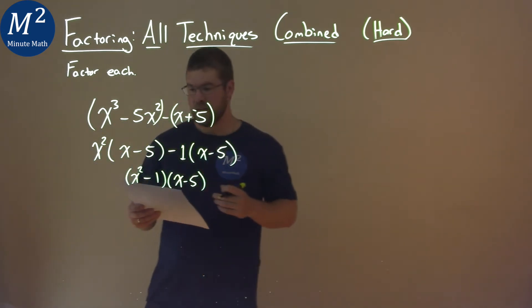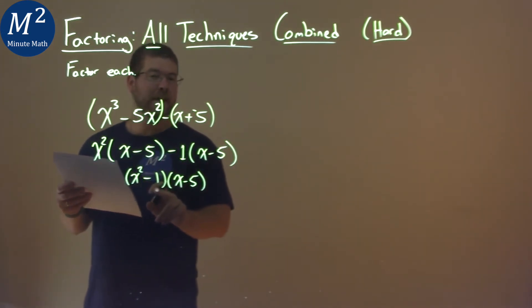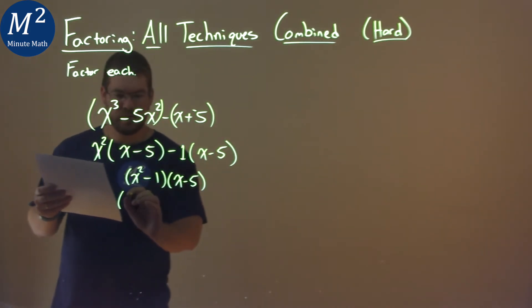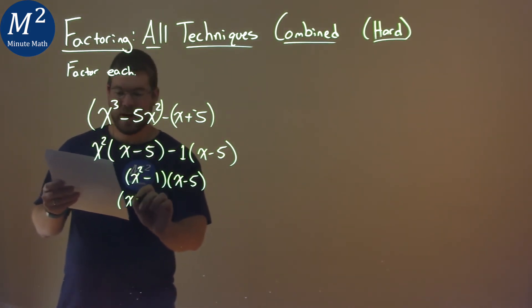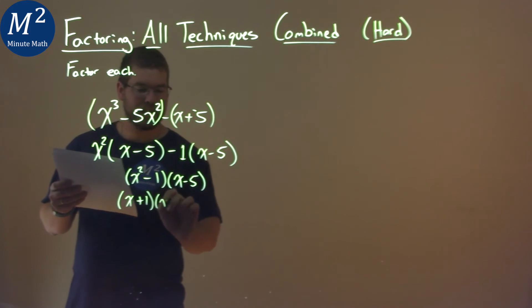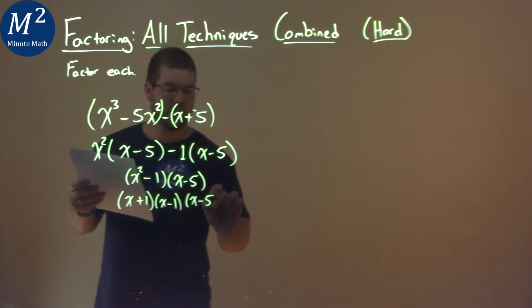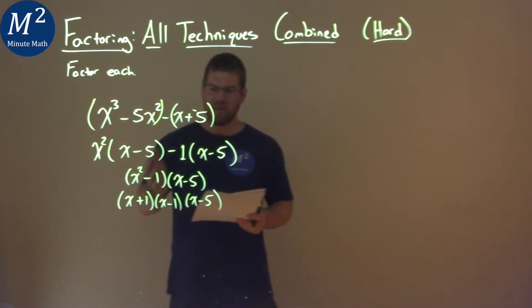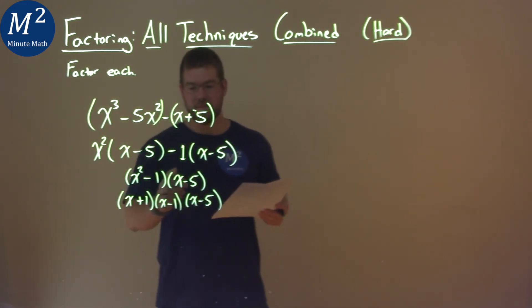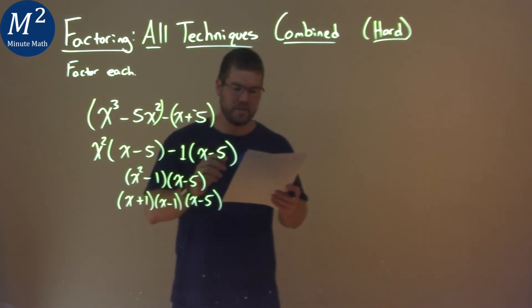Now, again, we're not done. x squared minus 1 can be the same thing as x plus 1 times x minus 1. That's how that factors out. And then we have an x minus 5 right there. And so our final answer is x plus 1 times x minus 1 times x minus 5.